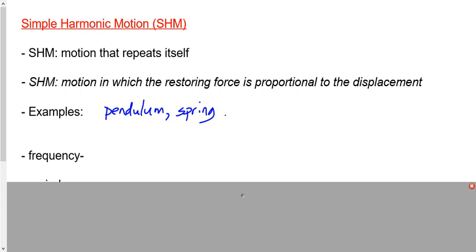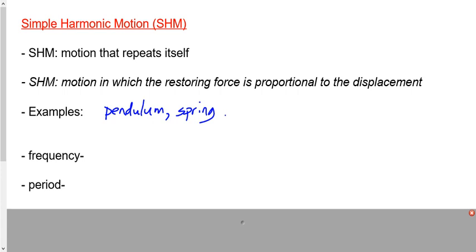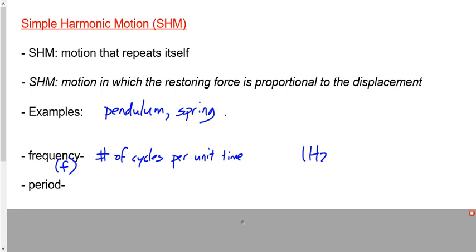We're going to define two terms. In the context of circular motion, frequency was the number of revolutions per second. In the context of Simple Harmonic Motion, frequency — given by the symbol lowercase f — is the number of cycles per unit time. The number of times the keys go back and forth per unit time. The units for frequency are Hertz (Hz), which is cycles per second. Period, big T, is the time per cycle, and its units are seconds.